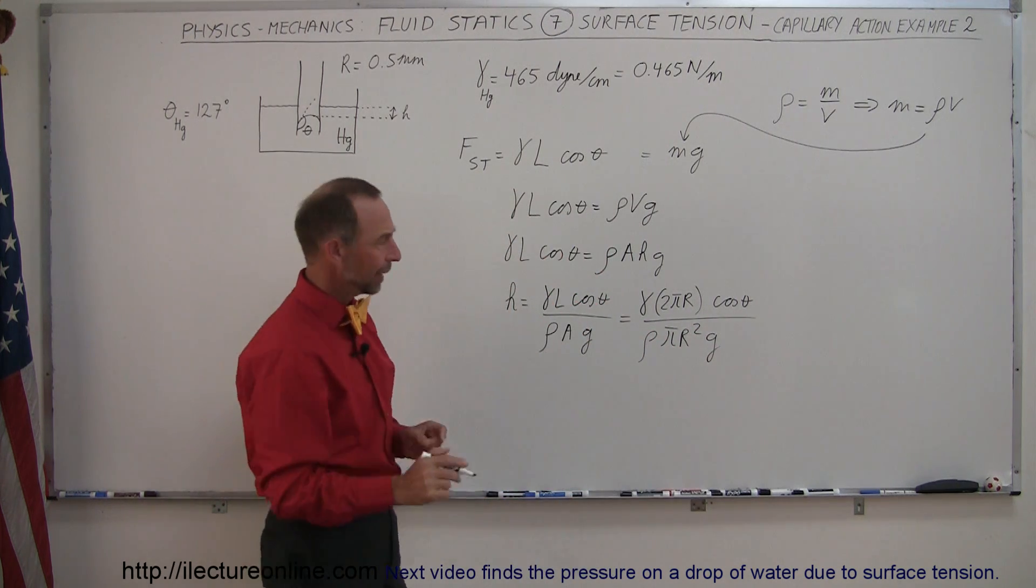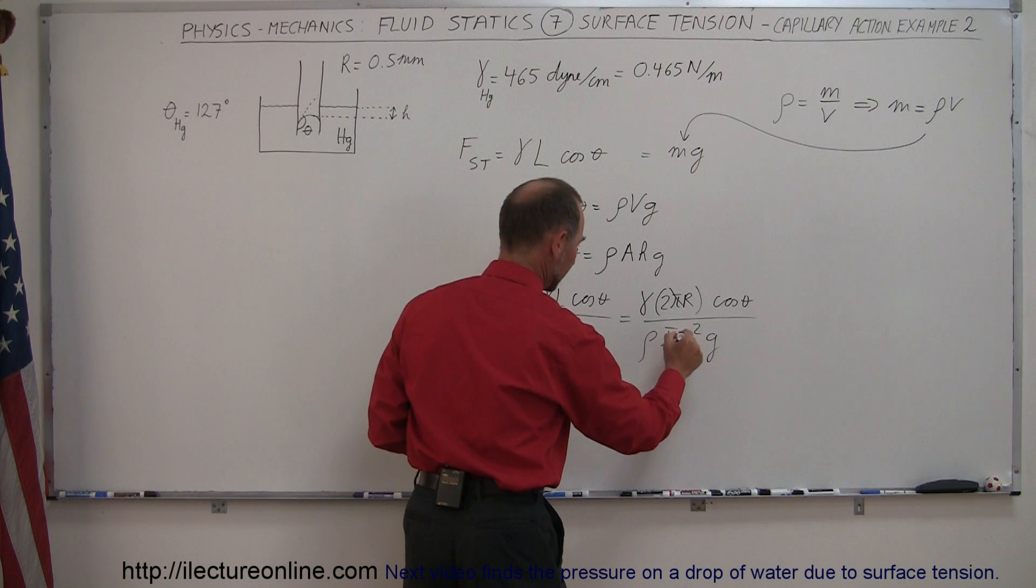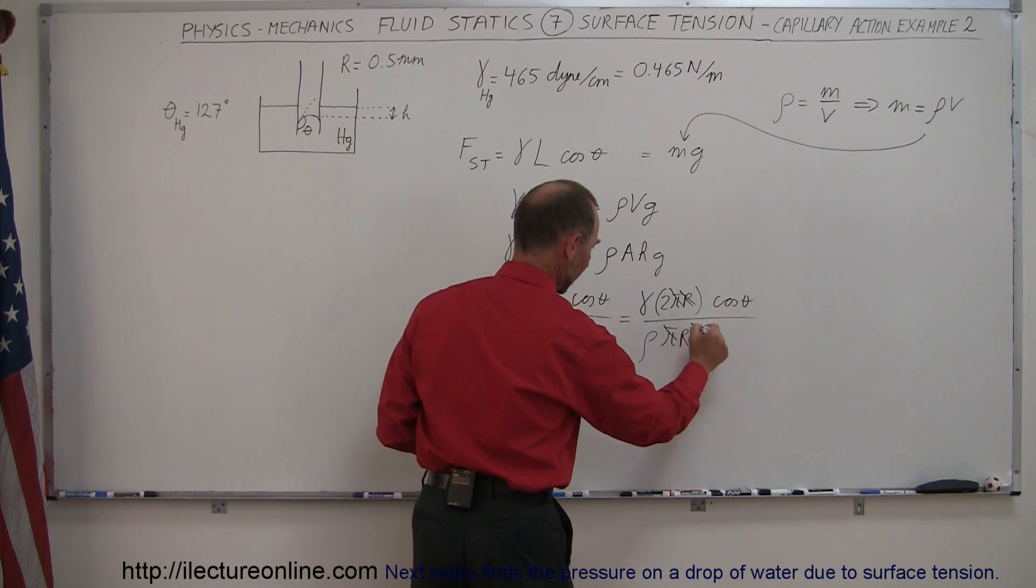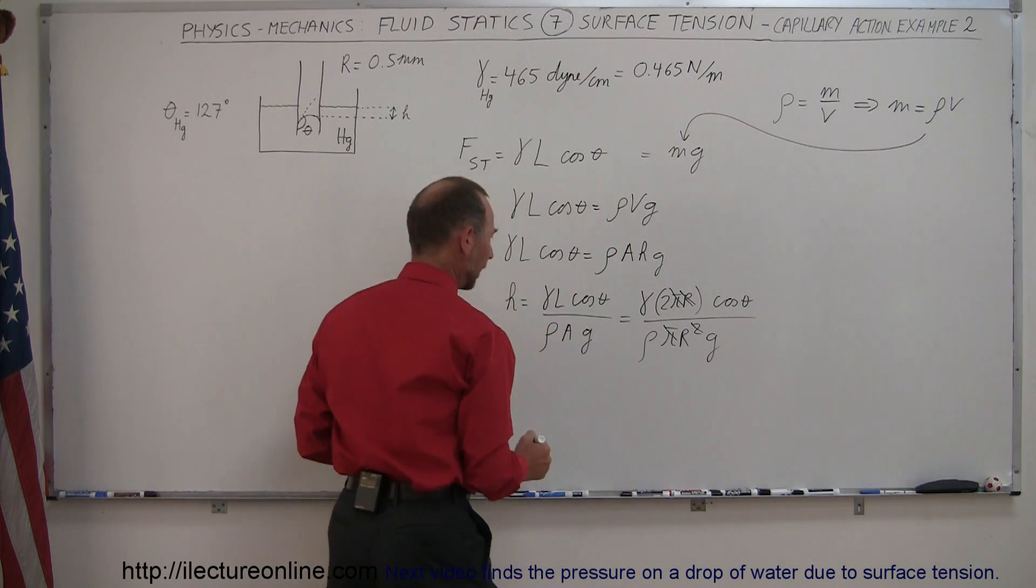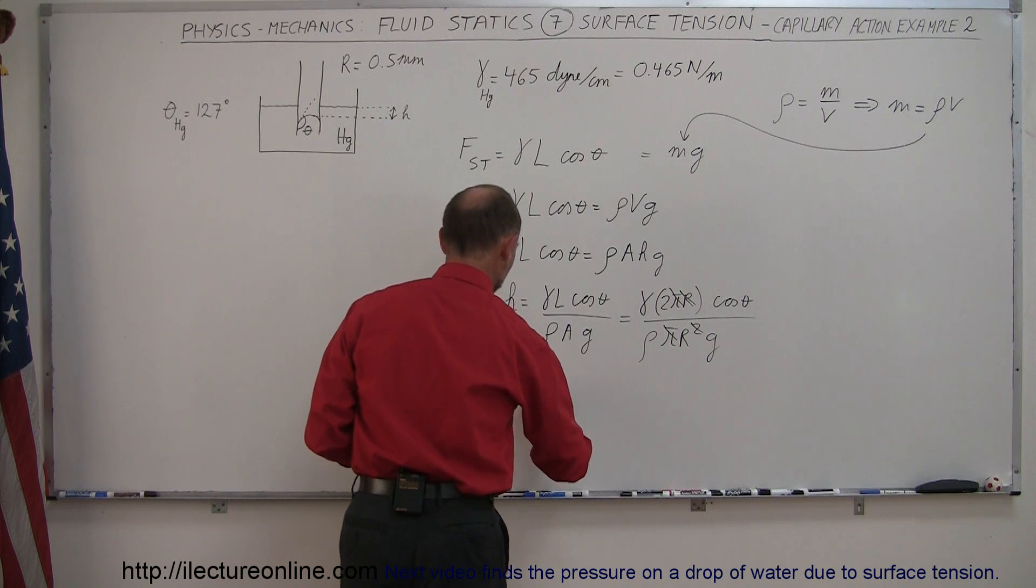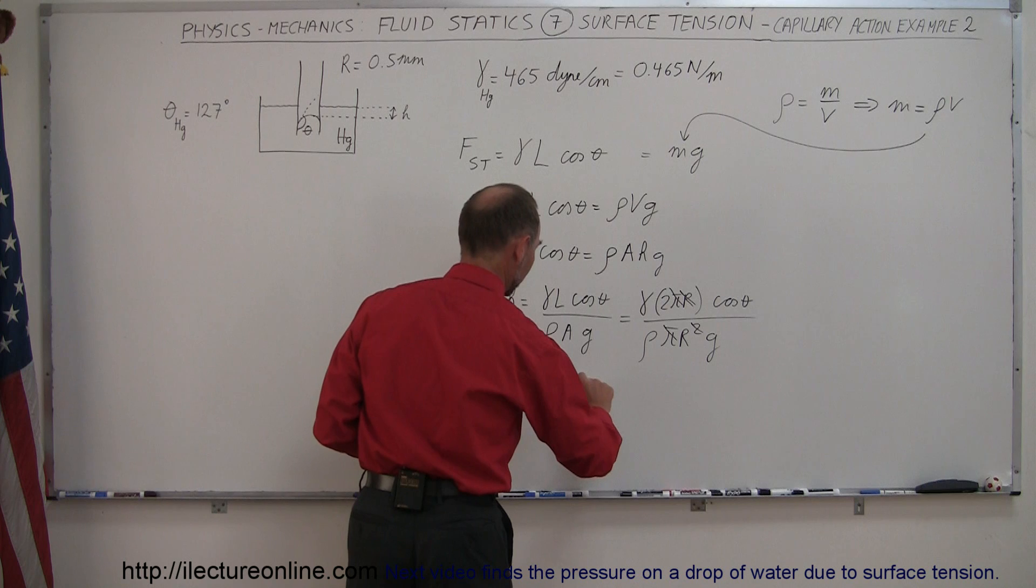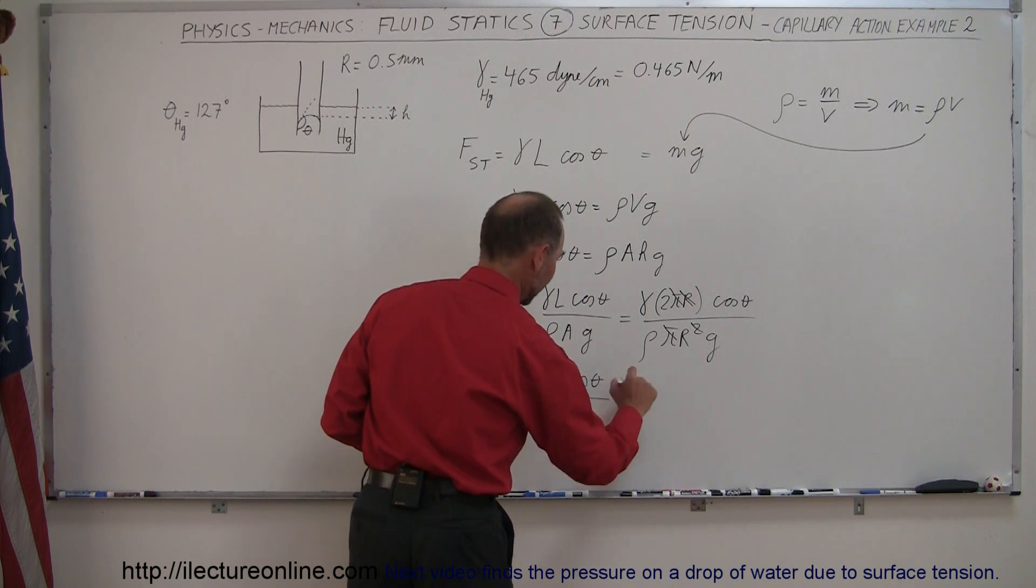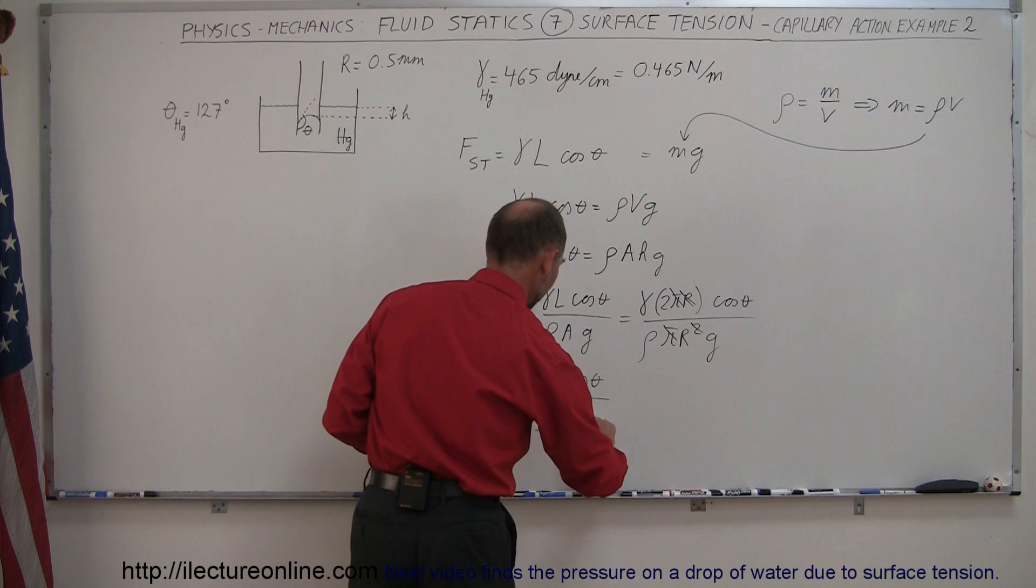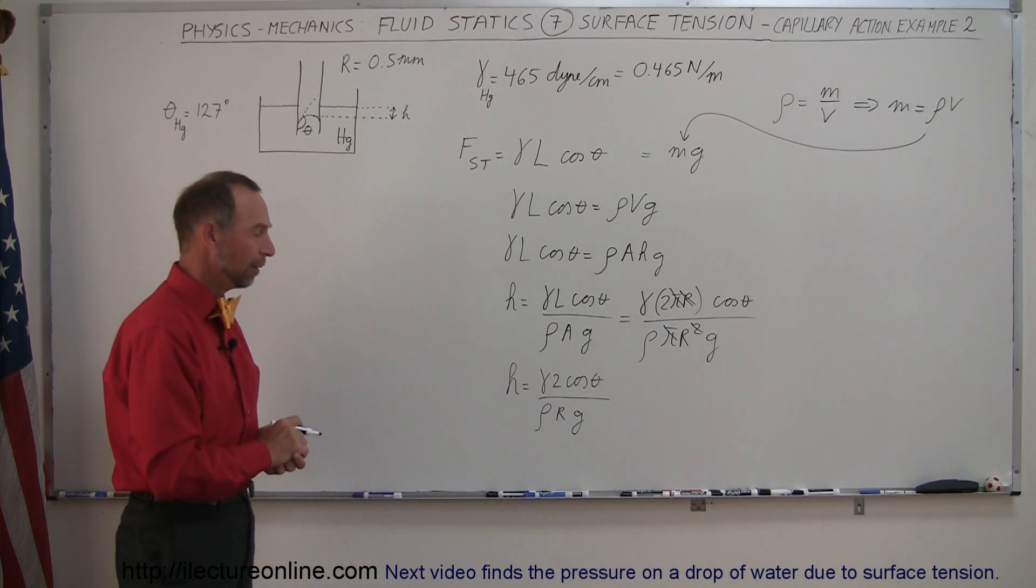Now we can simplify things just a little bit. We have a pi here and a pi there. We have one r and that r cancels out. And so we can say that h is equal to gamma times 2 times the cosine of theta divided by the density. One of the r survives in the denominator, and g. And now I'll have to just plug in what those numbers are.